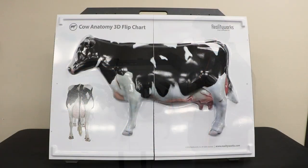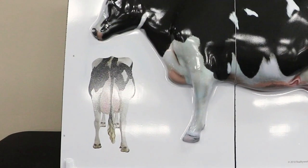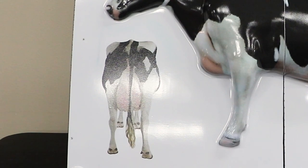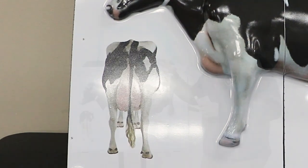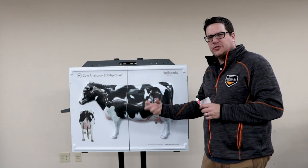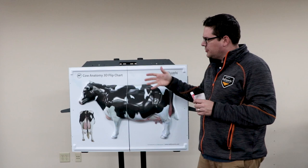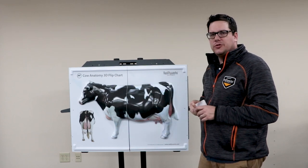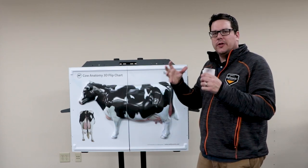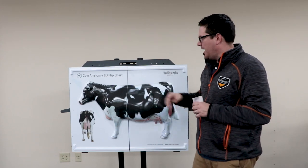It starts with the outer view of the cow. We also have a call-out of the back end of the cow so you can talk about different types of judging and different types of structures that you need to discuss with cow anatomy.